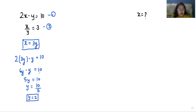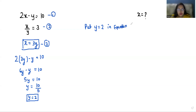Now we have to find the value of x. I'm considering x equals 3y as equation number three. Put y equals 2 in equation three. So x equals 3 times 2, that is 6. The value of x is 6.